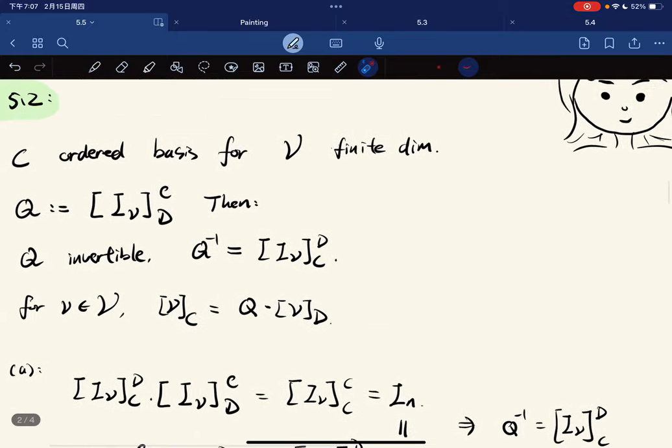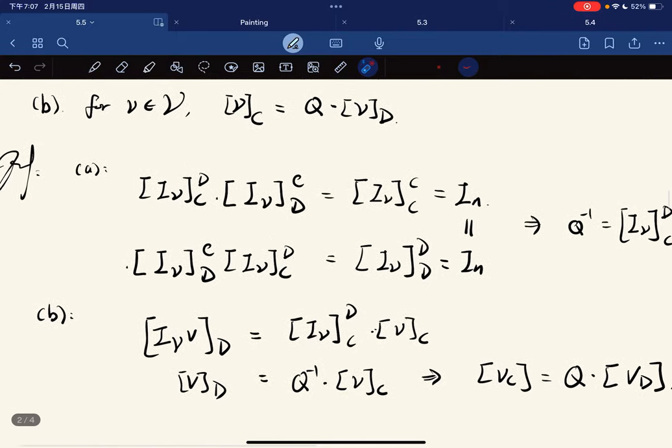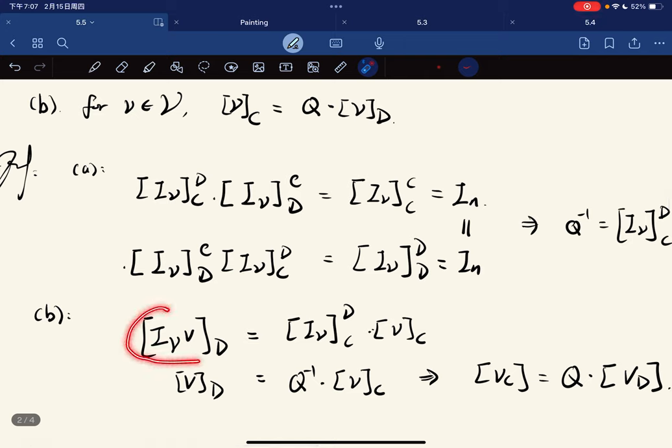For part (b), note that [Iv]_C with respect to v, we have this. But Iv is equal to v because I is the identity map.